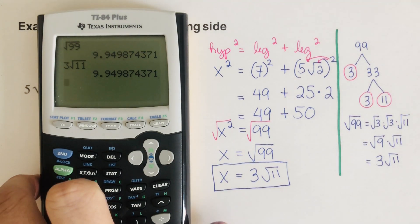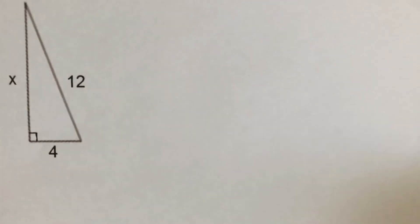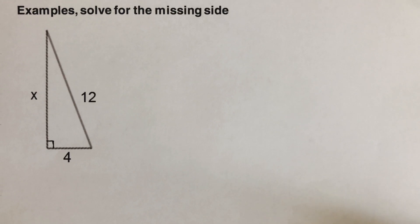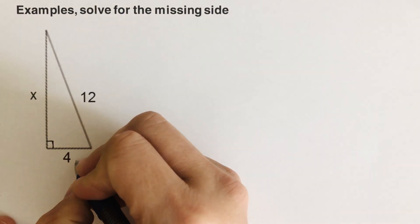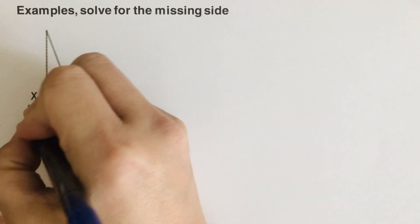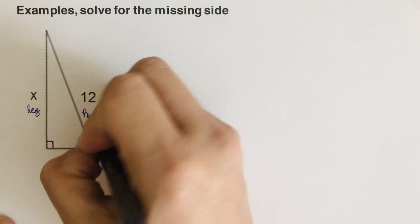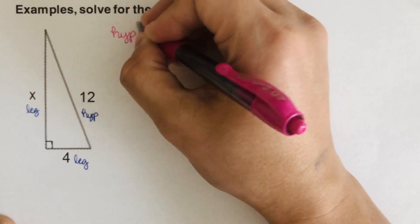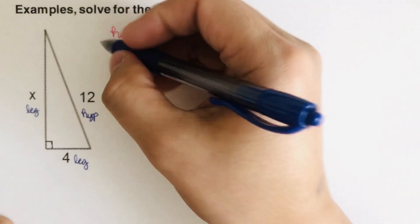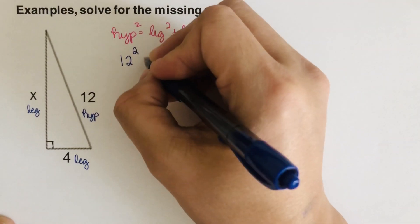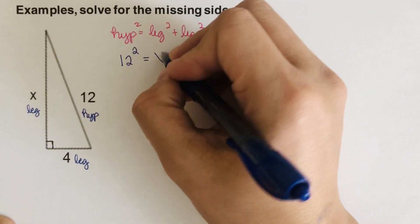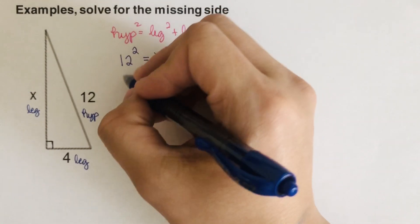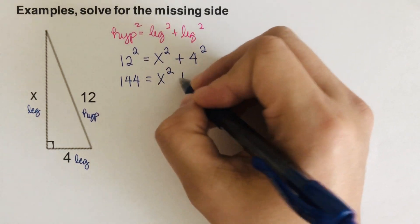Now for the second problem. Again, we identify the two legs and the hypotenuse. Using the same formula — hypotenuse squared equals leg squared plus leg squared — our hypotenuse is 12, so 12 squared equals x squared plus 4 squared. That gives us 144 equals x squared plus 16.